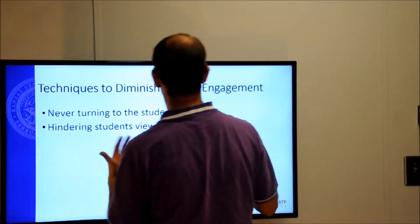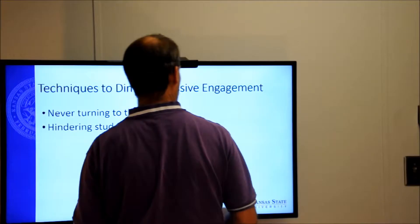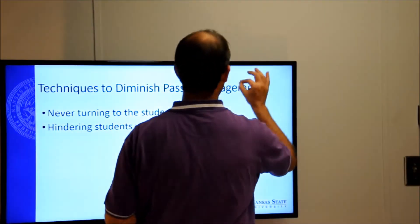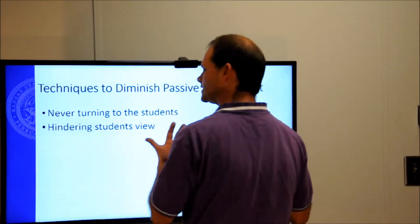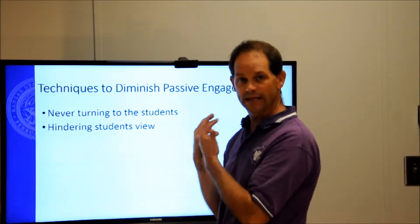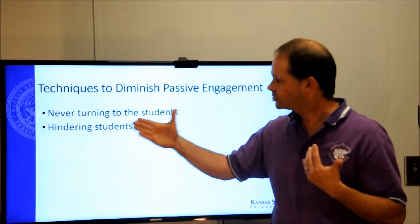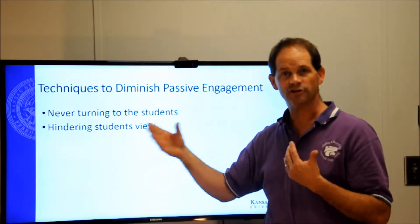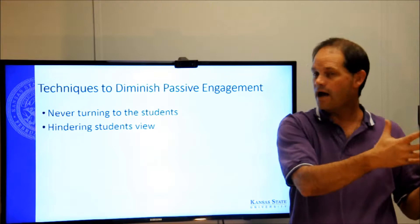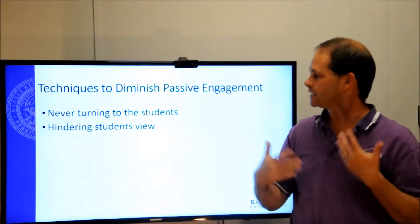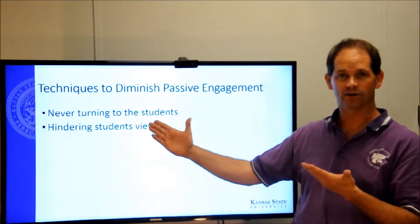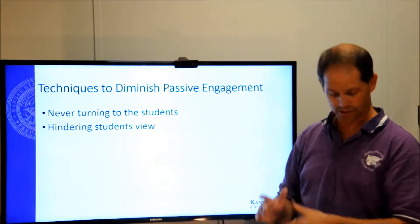Similarly, when you turn or write on the board, this is particularly difficult for right-handed people. You start writing and you automatically step in front of it as you go from left to right — all of a sudden nobody can see it. Don't hinder the students' view. Make sure you're not always standing in one spot; one corner of the room may not be able to see. Move around, take a step back from the board so everybody can see, and write in different locations.